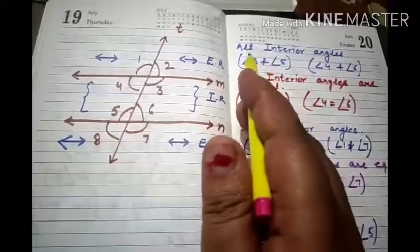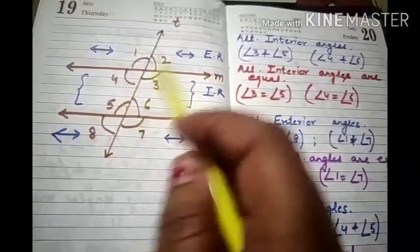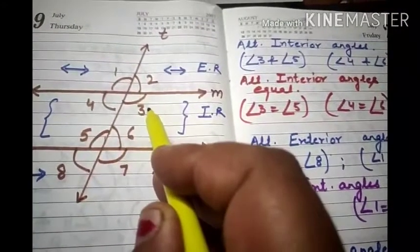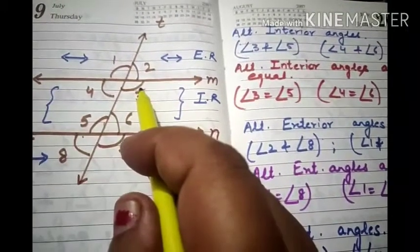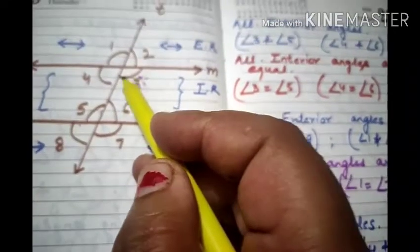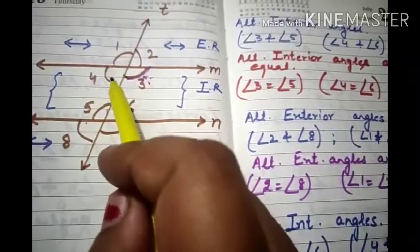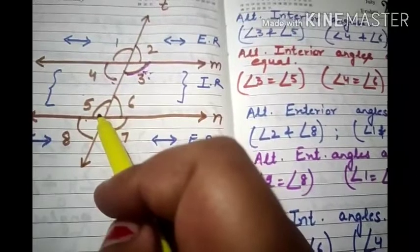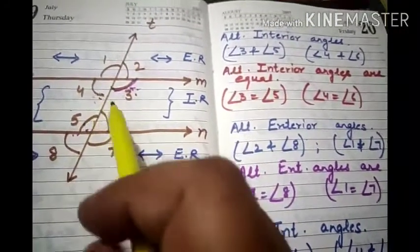Now, alternate interior angles. The name makes it clear — alternate means on the other side of the transversal, and interior means in the interior region. Angles 3 and 4 are adjacent, so you cannot take those. The alternate interior angle of angle 3 would be angle 5, which is on the other side of the transversal. So angle 3 and angle 5 are alternate interior angles. Similarly, angle 4 and angle 6 are alternate interior angles.